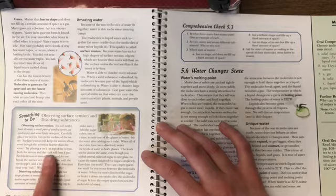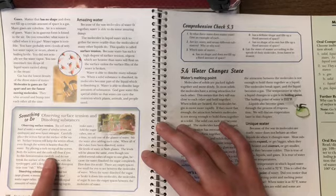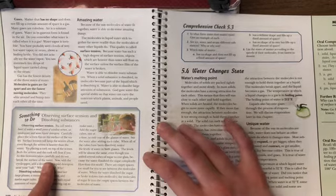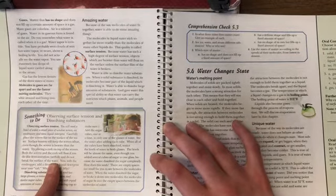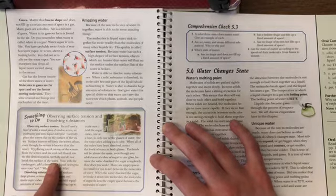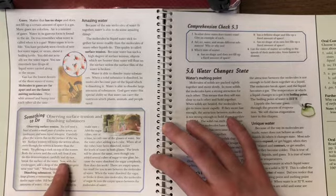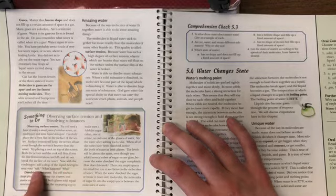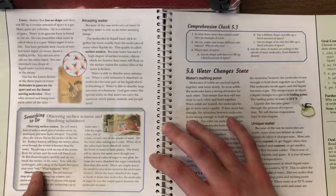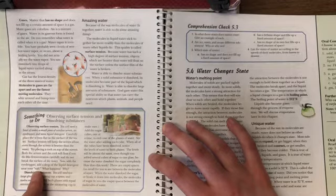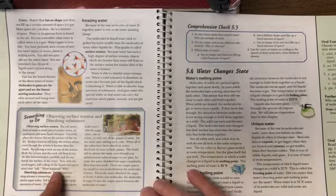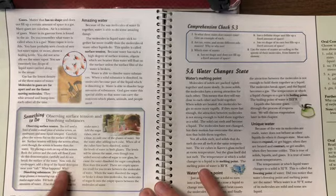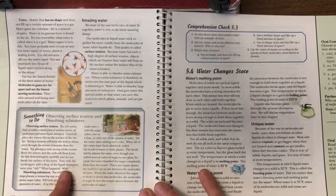Both the screen and the cork will float if you do this demonstration carefully and do not break the surface of the water. What they mean by that is you have to very carefully set it down on top of the screen. Otherwise, if you push too hard, you'll break that surface tension. Now, with the eyedropper, add a drop of the liquid detergent near your raft, which means near that piece of screen with the cork on top of it. So what happens? What do you think is going to happen? And why?